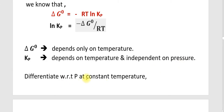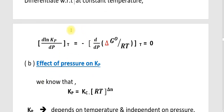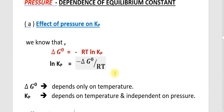Differentiating with respect to pressure at constant temperature, we get: d(Ln Kp)/dP at constant temperature equals minus d/dP of (delta G°/RT) at constant temperature, which equals zero. That is the effect of pressure on Kp — Kp is independent of pressure.